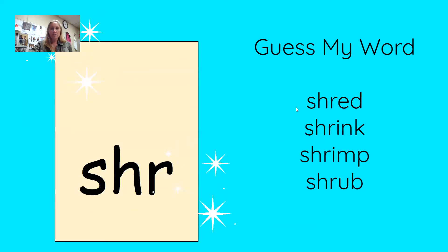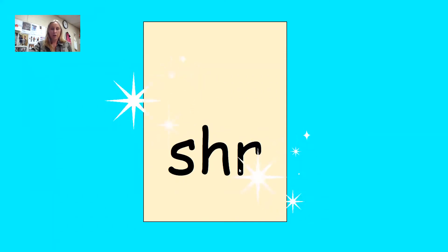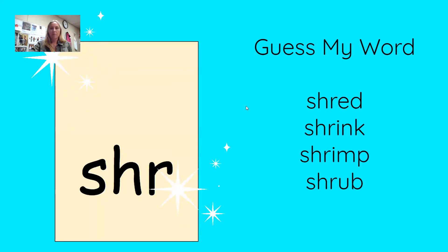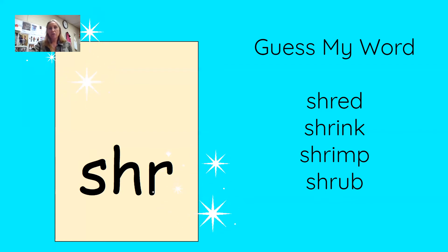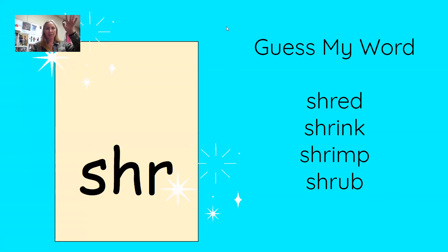Our last blend is 'shr' — again, a digraph of 'sh' with our R. Play at home with these words: shred, shrink, shrimp, and shrub. Practice reading any and all of those words. We'll be playing bingo in class tomorrow, so make sure you make your bingo card so you can play bingo at home with all of the three-letter blend words — different than last week's bingo game. We'll see you all soon. Bye!